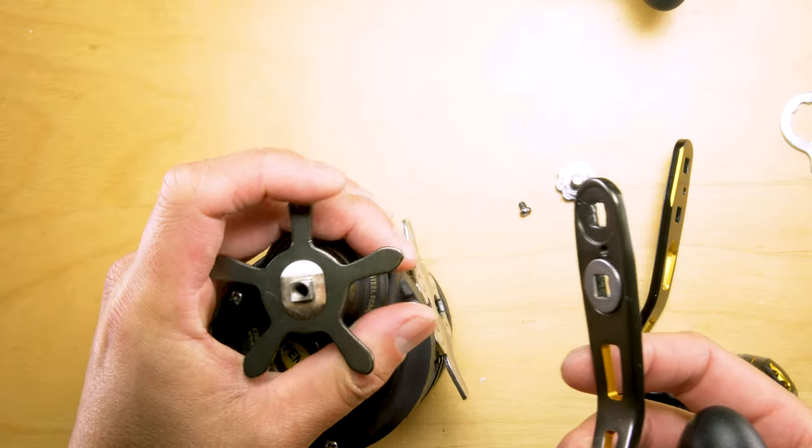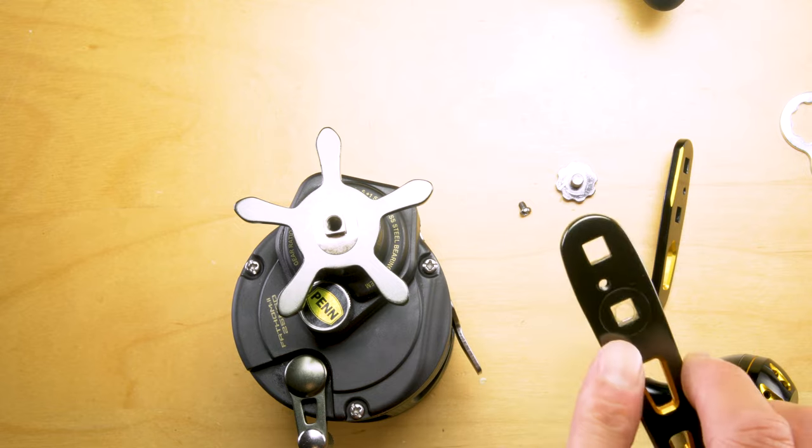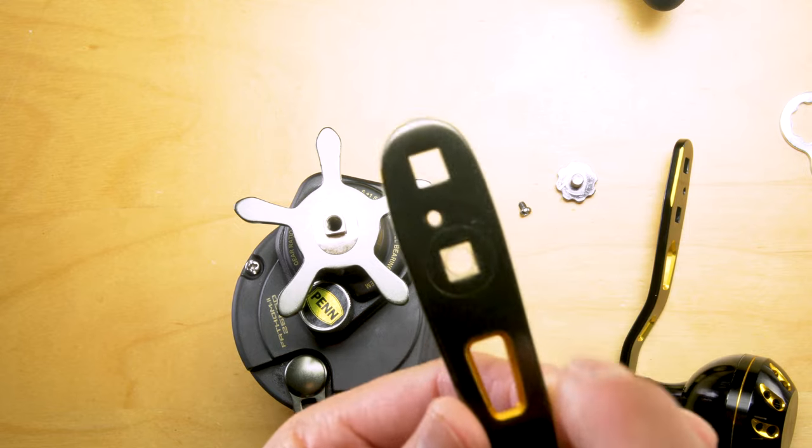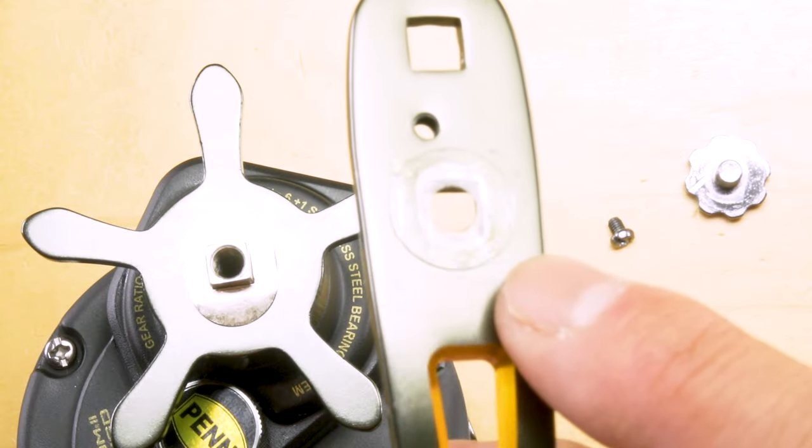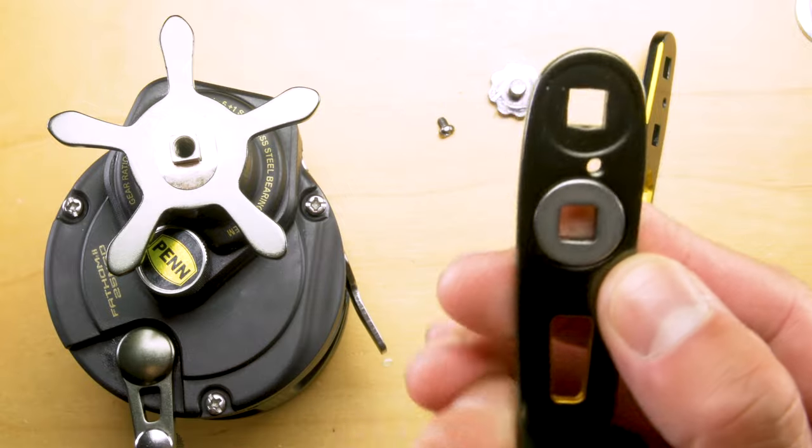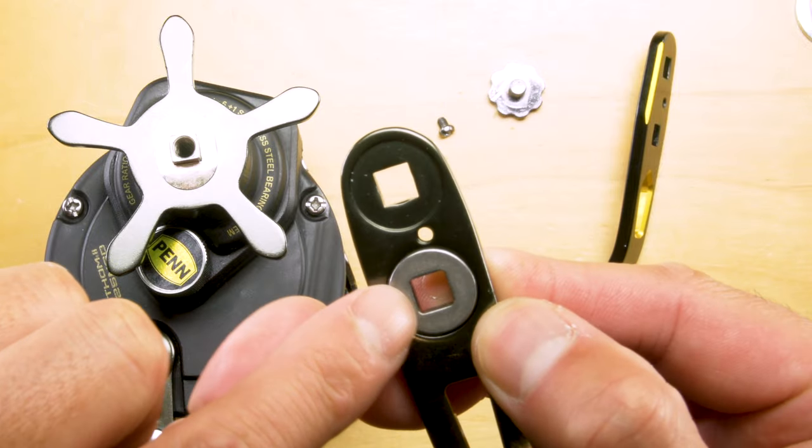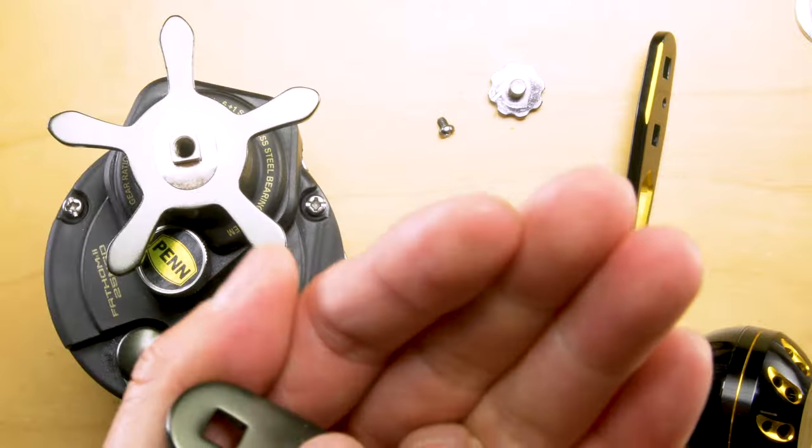So once we have everything off, the only thing we're going to bring over is there's a top plate plastic shim washer on the top and this bottom one that recesses into where the handle is. Just fills in that gap.